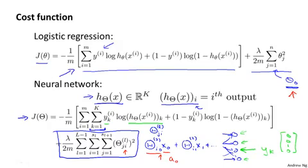But this is just one possible convention. And even if you were to sum over i equals zero up to SL, it will work about the same and it doesn't make a big difference. But maybe this convention of not regularizing the bias term is just slightly more common. So that's the cost function we're going to use for our neural network. In the next video, we'll start to talk about an algorithm for trying to optimize the cost function.